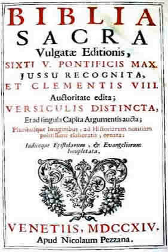Vulgata Sixto Clementina is the edition of the Latin Vulgate from 1592, prepared by Pope Clement VIII. It was the second edition of the Vulgate authorized by this pope, and it was used until the 20th century.